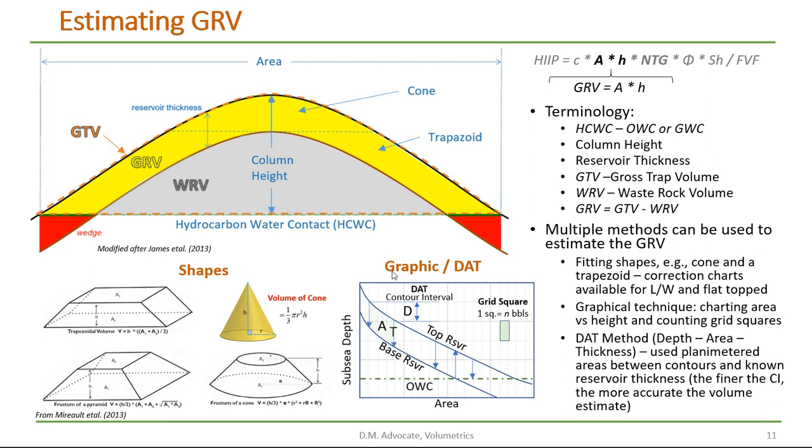Let's talk about the graphic technique. In this chart we have sub-c depth on the y-axis and the area between the contours that we planimetered on the x-axis. Each of the horizontal lines on this grid represent a contour interval. So we know the depth and from the planimetering the area between the contours.